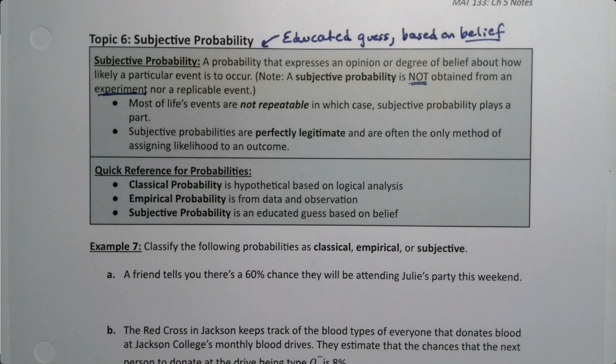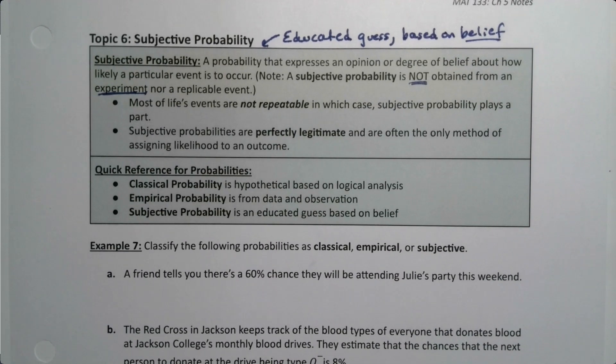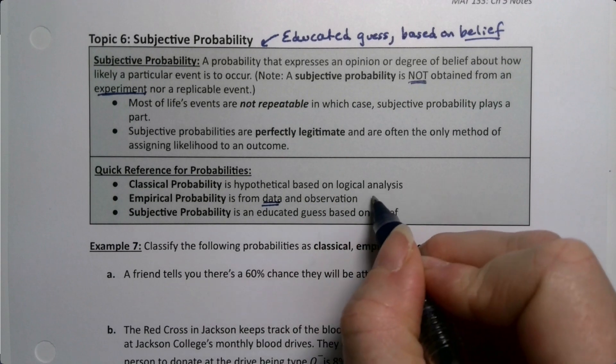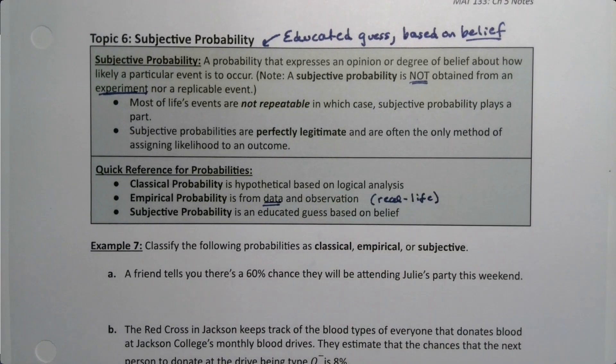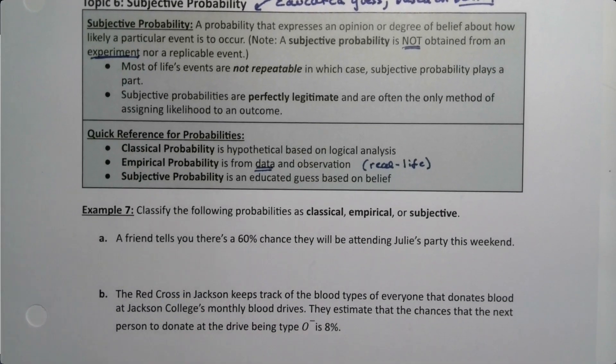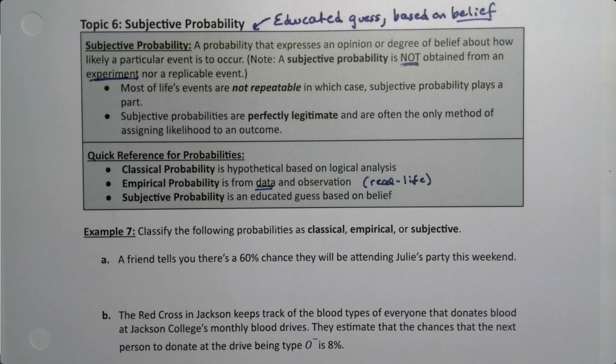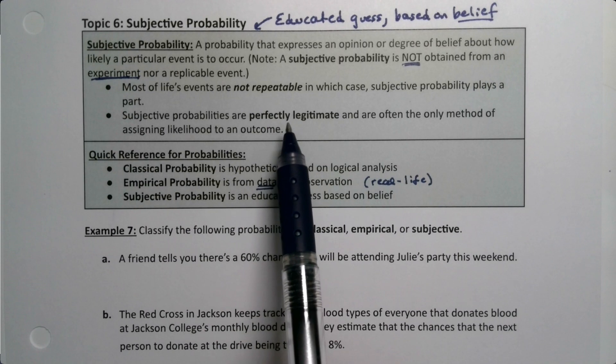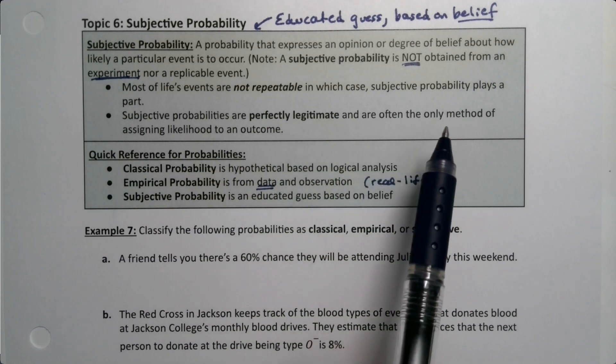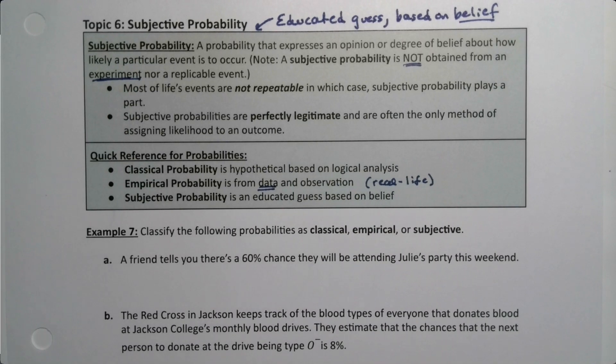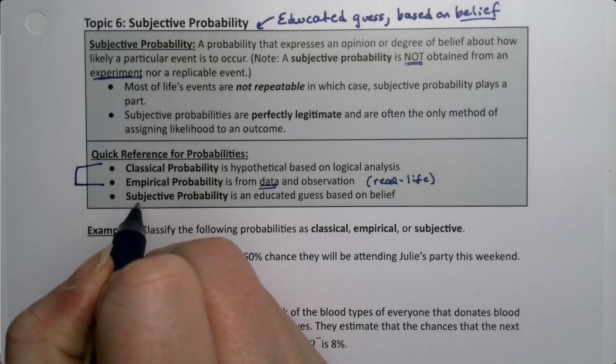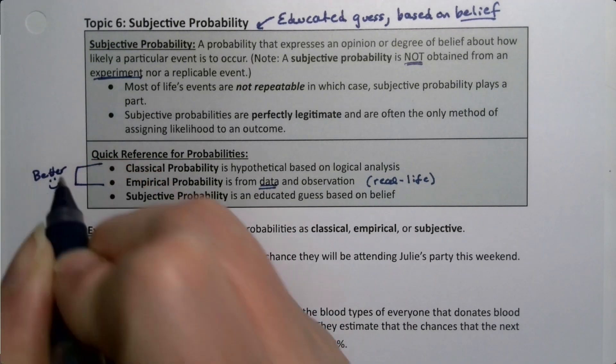So what are the three probabilities? There's classical. Classical probability is this hypothetical based on logical analysis. You just kind of look at the die and imagine how it's going to be. Empirical is based on data, real-life observation. And then subjective probability is an educated guess based on belief. Subjective probabilities are legitimate because there are a lot of things in this world that are not repeatable. And if they're not repeatable, then subjective probability is your only chance of figuring something out. So it's often the only method that we have of assigning the likelihood of an outcome. But nevertheless, it's obviously not as strong as a classical or an empirical probability. Obviously, these two are better if you can manage it. But sometimes we can't. So these are better. I'm willing to make that judgment call.